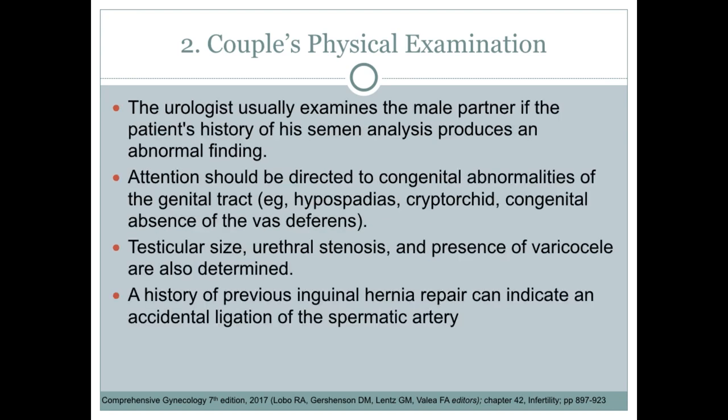The urologist usually examines the male partner if the semen analysis produces an abnormal finding. Attention should be directed to congenital abnormalities of the genital tract, such as hypospadias, cryptorchidism, and congenital absence of the vas deferens. Testicular size, urethral stenosis, and presence of a varicocele are also determined. A history of previous inguinal hernia repair can indicate an accidental ligation of the spermatic artery.